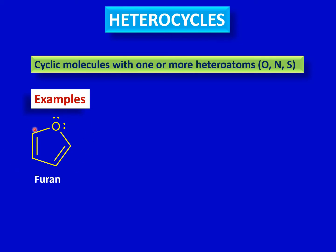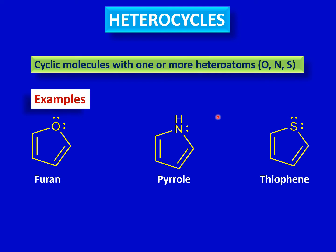Furan has a five-membered ring with an oxygen and two double bonds separated by a single bond, meaning the system is conjugated and resonance is possible. Then we have pyrrole, which again has a five-membered ring but with nitrogen. Another example is thiophene, which looks similar to furan but has sulfur in a five-membered ring. Finally, there is pyridine, which has a six-membered ring with nitrogen. Each of these molecules has a heteroatom in the structure.